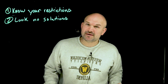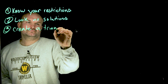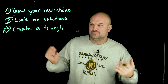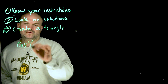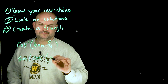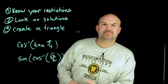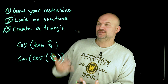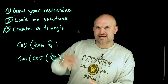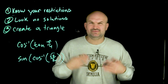Tip number three: when you have values that are not on the unit circle, look to create a triangle. When teaching composition of inverse trig functions, we often start with unit circle values. But some problems have values you won't recognize from the unit circle, so you need to draw a triangle. Restrictions are important both for unit circle values and when working with triangles.